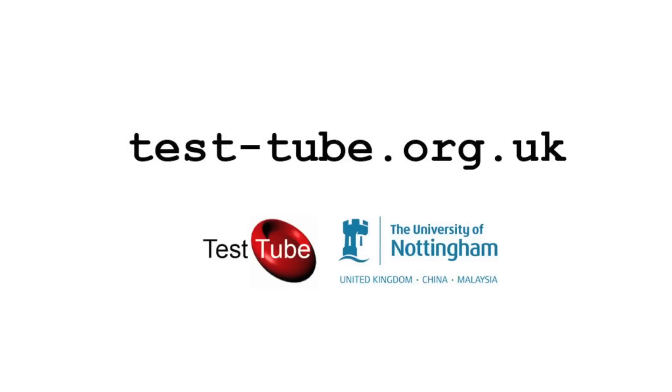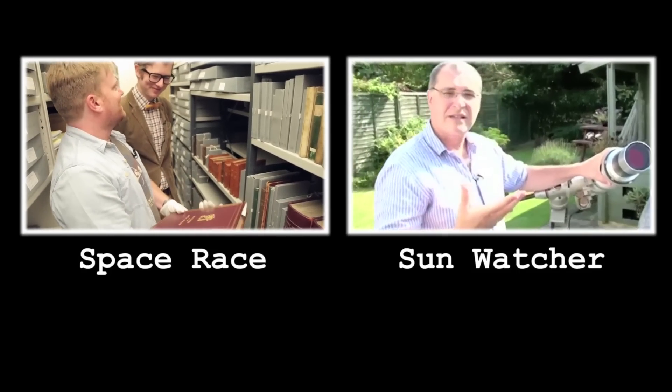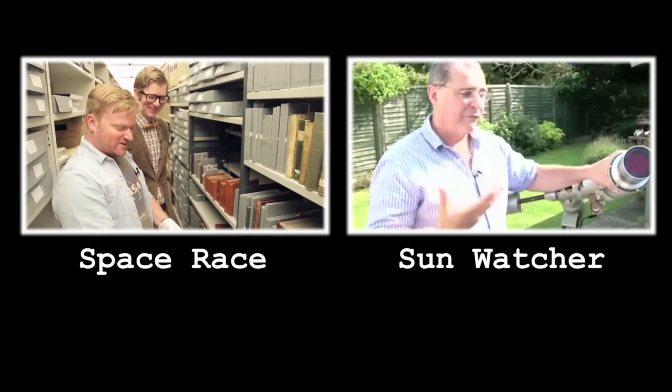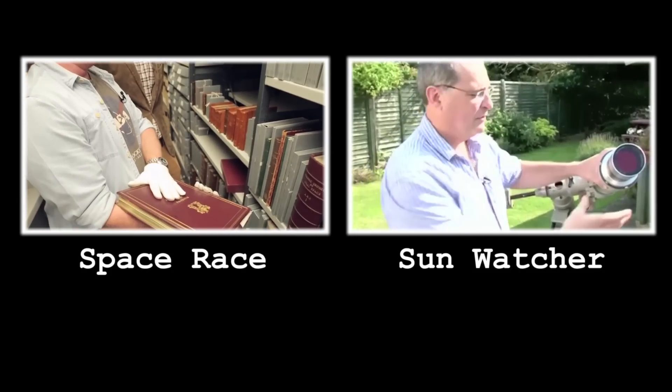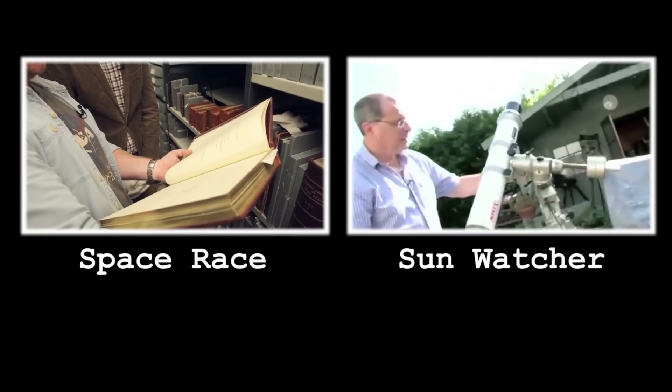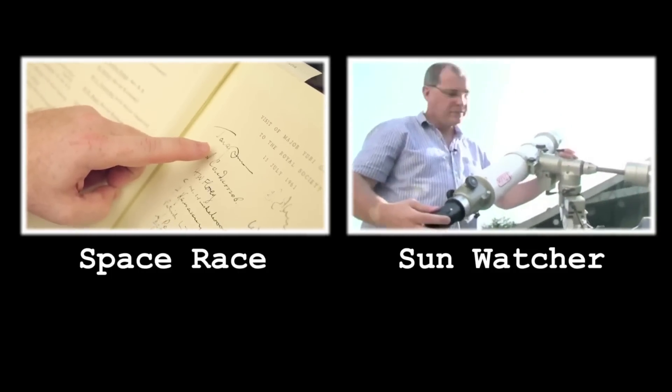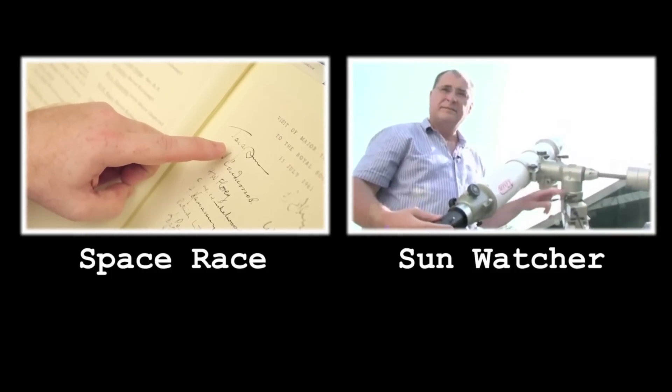We have visitors to the Royal Society. We think they actually had this book specially made. Because Yuri Gagarin came to the Royal Society, they thought, wow, we're going to need a better visitors book. The Visit of Major Yuri Gagarin to the Royal Society, 13 July 1961, top of the heap, top left. That is Yuri Gagarin signing the book.